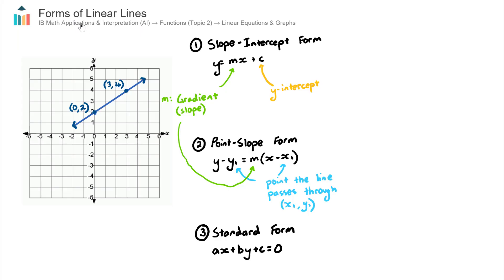This video covers the different forms of linear lines found in the IB Maths AI course in Topic 2 Functions, under the subtopic of linear equations and graphs. We're talking about linear lines — that just means straight lines — and there are a few different forms that you will encounter during your AI course.